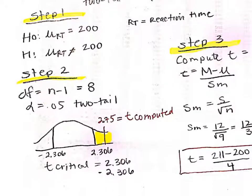For step 2, we're going to look for our t-critical. To find the t-critical we'll use the t-table, and we'll need a couple of pieces of information: the degrees of freedom, which equals n minus 1, so 8; our alpha level of 0.05; and it's a two-tailed test. We'd draw that out, look at our t-table, and find a value of 2.306. Because it's two-tailed, we also need a value in the negative direction: negative 2.306. This means if our t-computed is greater than 2.306 or less than negative 2.306, it falls into the statistically significant critical region.